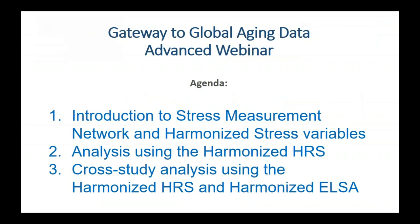Our agenda: first, Alexandra is going to introduce the Stress Measurement Network, which we've been working with for a few years to develop this set of harmonized stress variables that we're just beginning to release. Second, using Stata, we'll do a sample analysis using the harmonized HRS — a user-friendly version of the HRS produced as part of the Gateway to Global Aging Data project. Third, we'll do cross-study analysis using the harmonized HRS and harmonized ELSA. ELSA is the HRS sister study conducted in England. HRS is a longitudinal aging study conducted in the United States out of the University of Michigan.